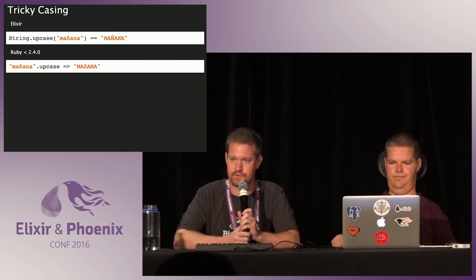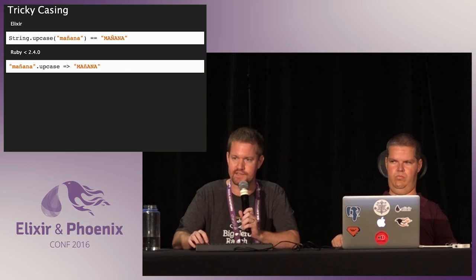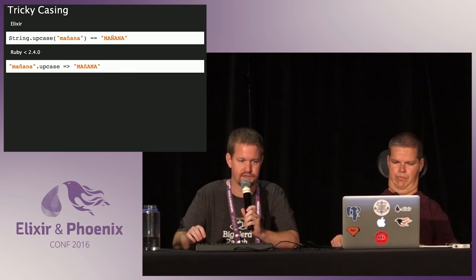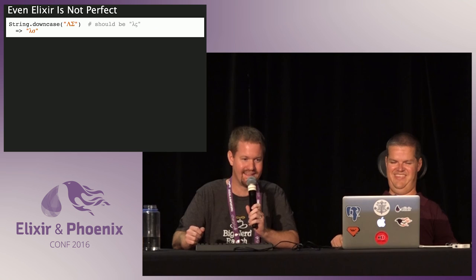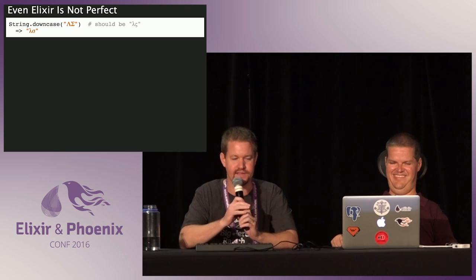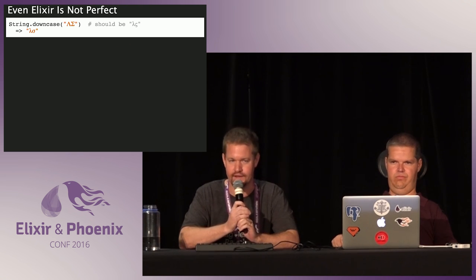Casing can be tricky — even though casing is implemented via basically a case statement, a lot of languages do this wrong. Until the upcoming release of Ruby, they're still getting this wrong right now. Even Elixir, which has a really nice case statement in the form of function heads matching to do this operation, doesn't get everything perfect — because human language is ridiculously complicated. For example, the sigma character, when you downcase it according to actual grammatical rules, has to be downcased differently whether it's at the end of a word or not, and Elixir doesn't handle that. If you need to do it more correctly for Greek, then write your own function.